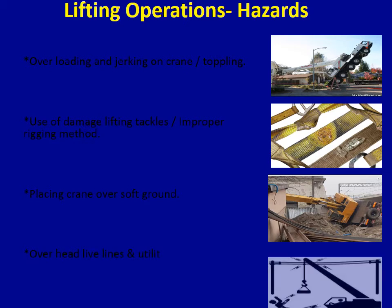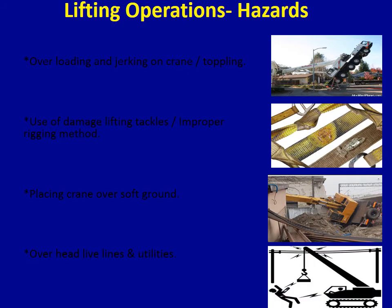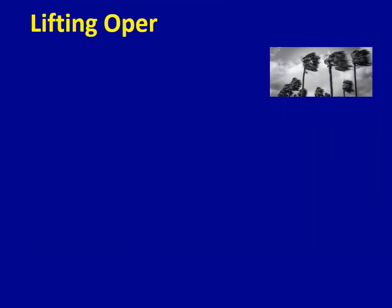Working a crane near live lines or utilities — such as pipelines or electrical lines — may result in electrocution if the crane boom makes contact. Poor weather conditions can cause the load to jerk and hit any utilities.